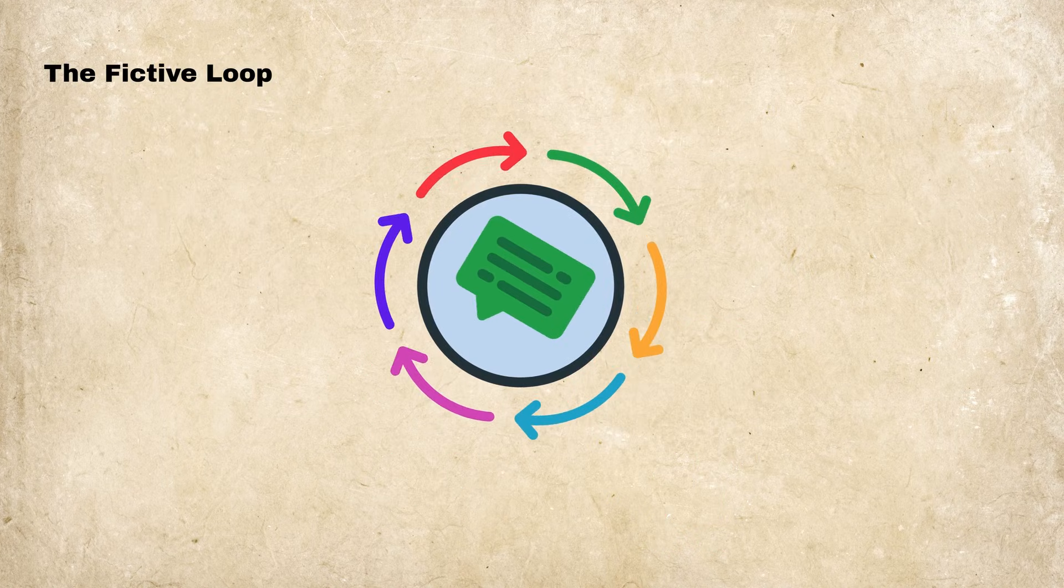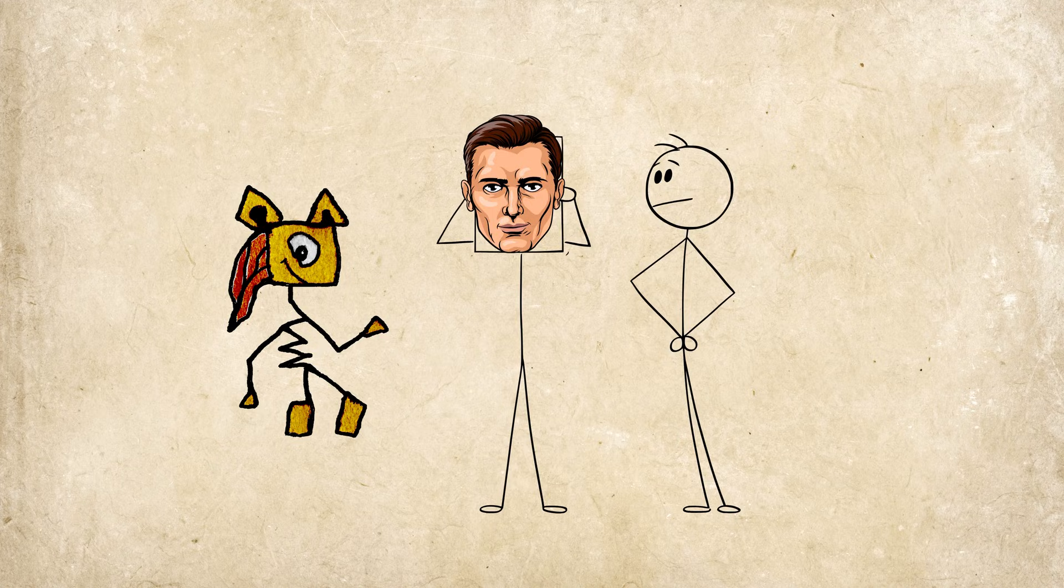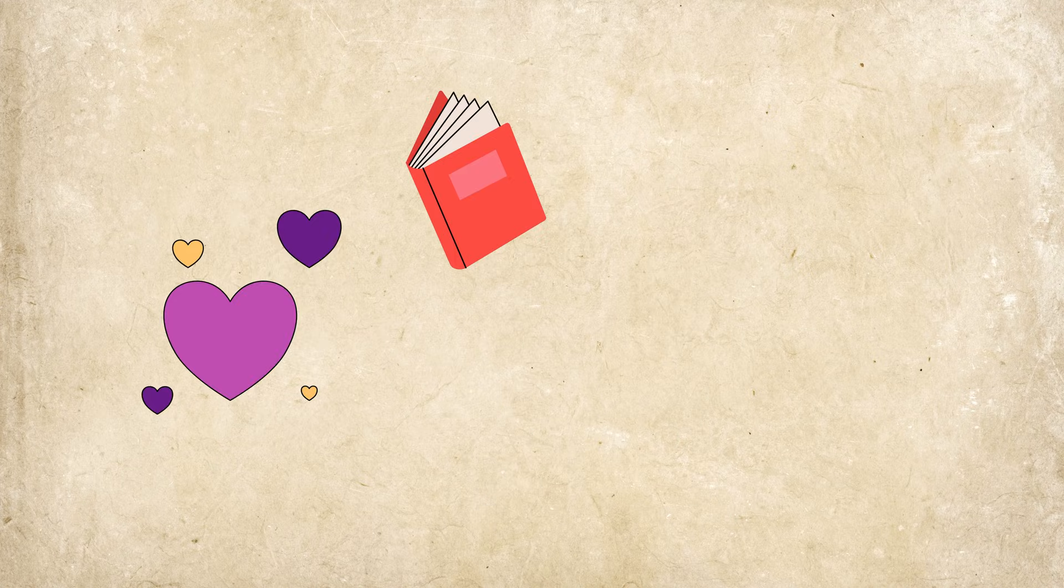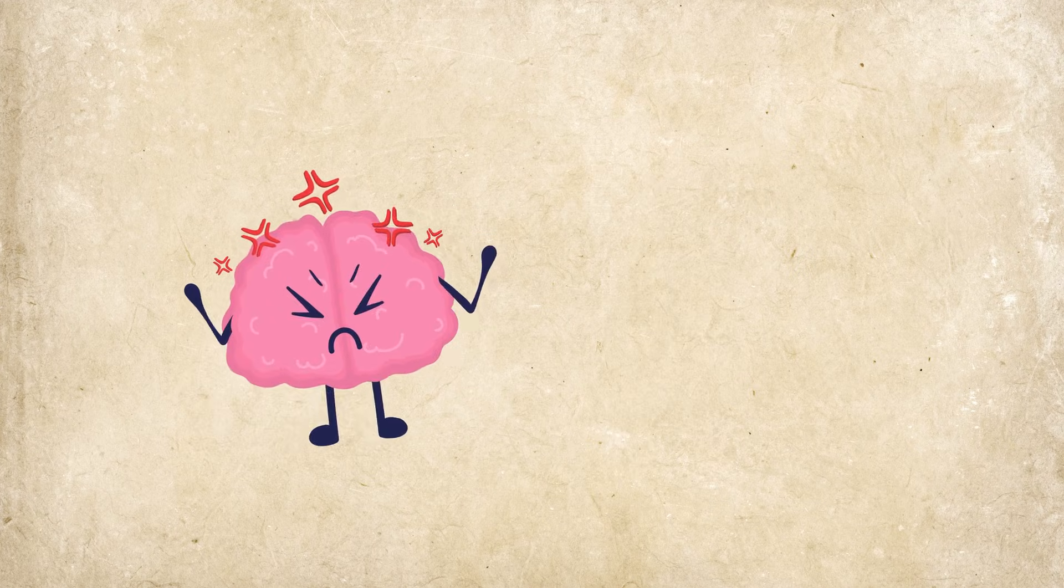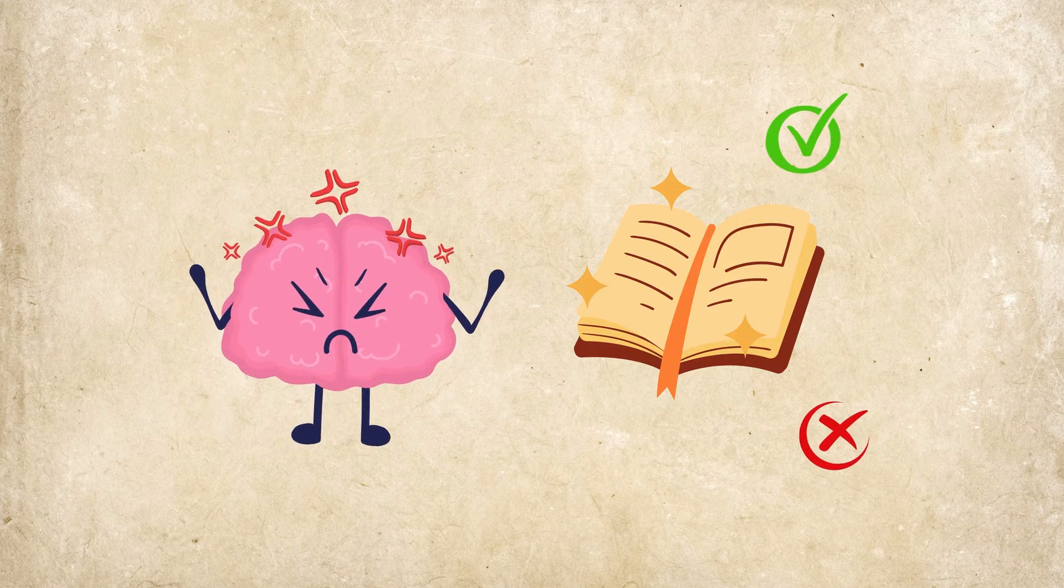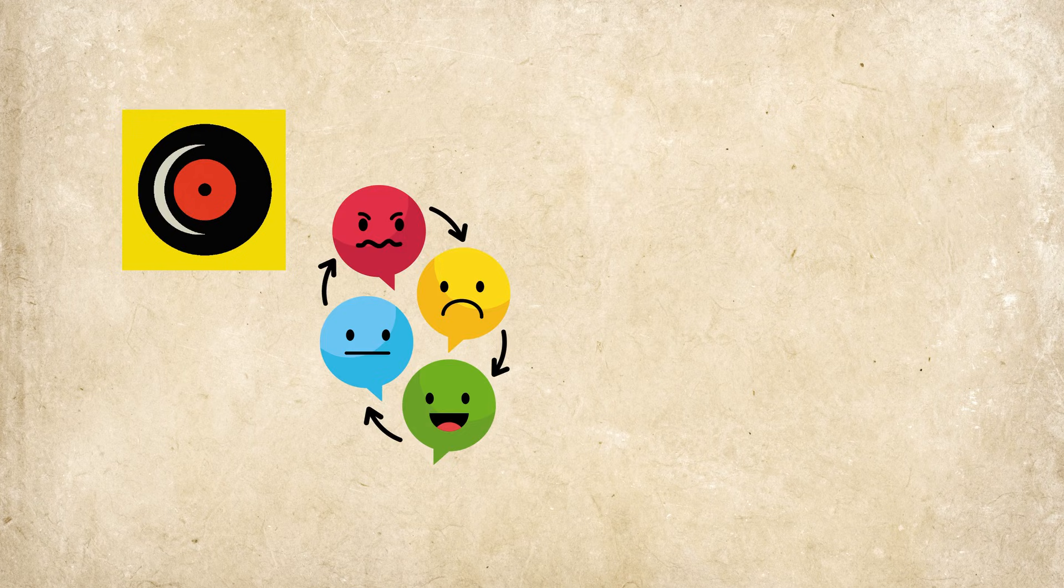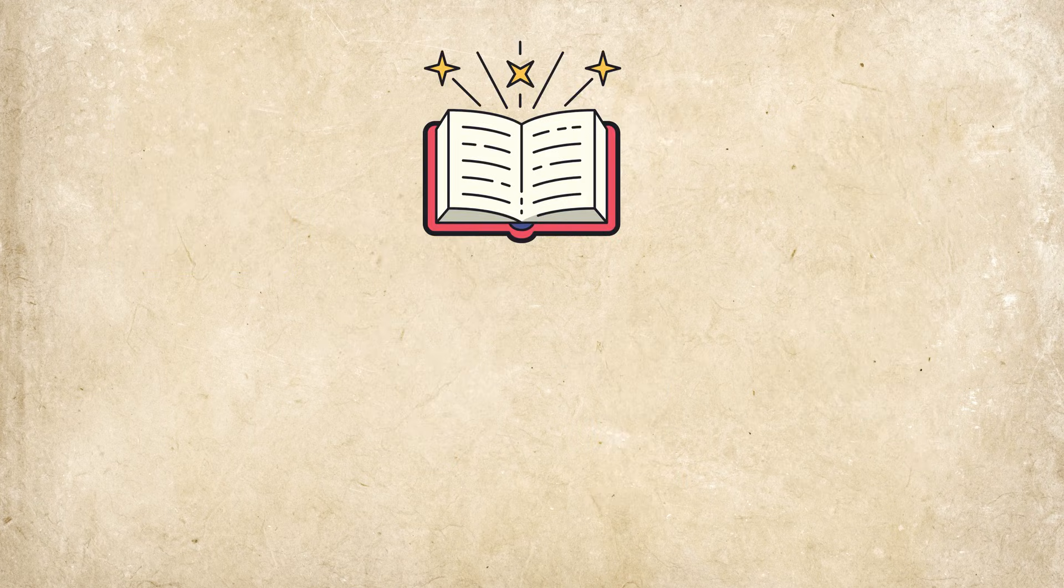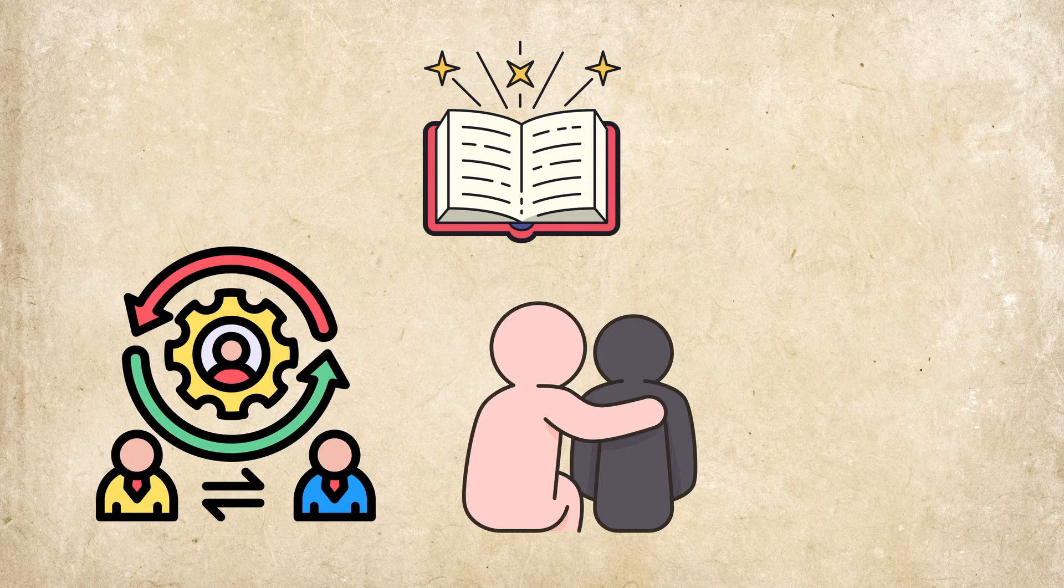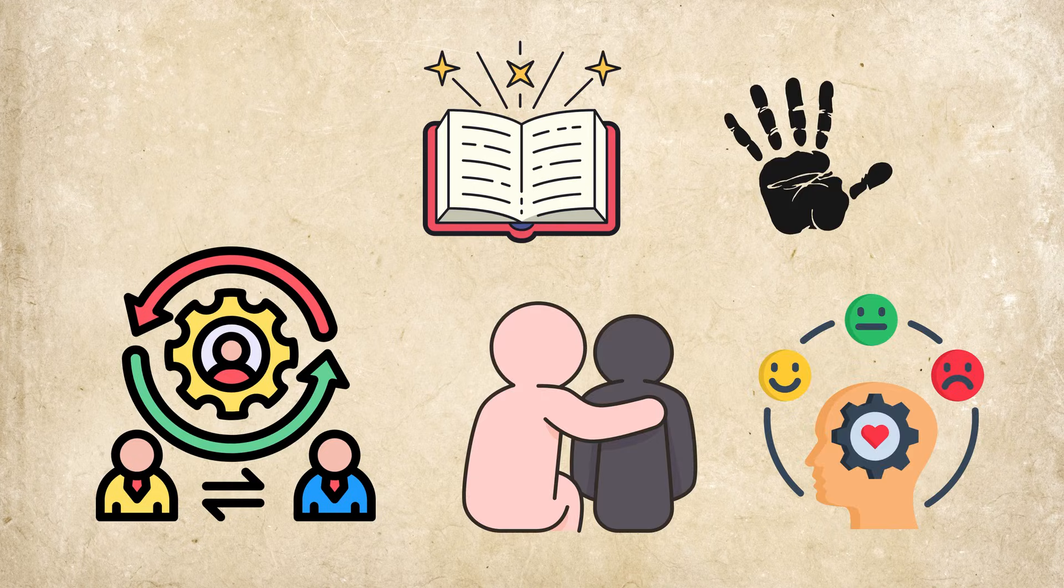The Fictive Loop. Why do fictional characters feel so real? When a beloved book or movie character dies and you genuinely mourn or get angry, your brain doesn't care if the story was real or not. The Fictive Loop means emotions triggered by fiction get logged as real memories, which is why stories can change us deeply, teach empathy, and leave lasting emotional imprints.